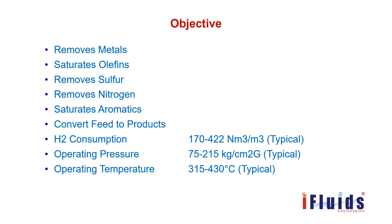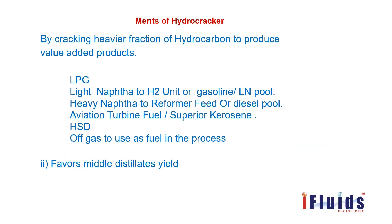The objectives of the hydrocracker are to remove metals from the feed, saturate olefins, remove sulfur, remove nitrogen, saturate aromatics, and convert feed to products. It consumes hydrogen, and the operating pressure is very high — around 250 kg per centimeter square gauge. The operating temperature is around 410 degrees Celsius.